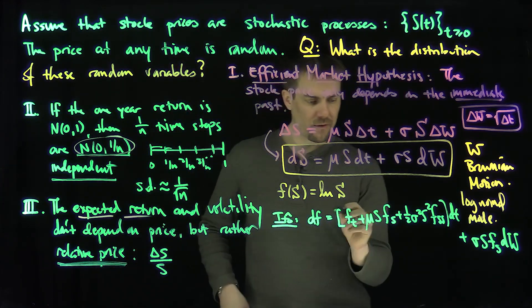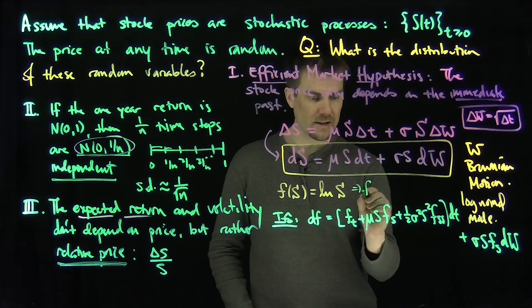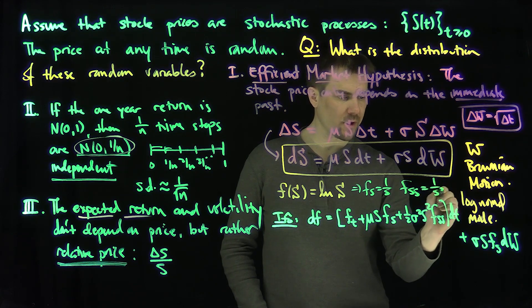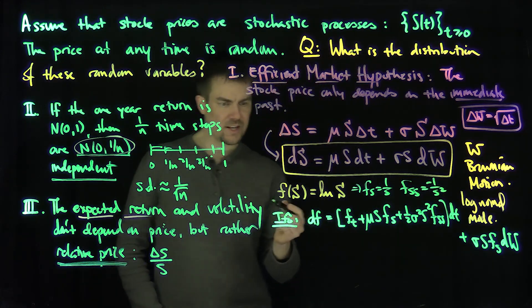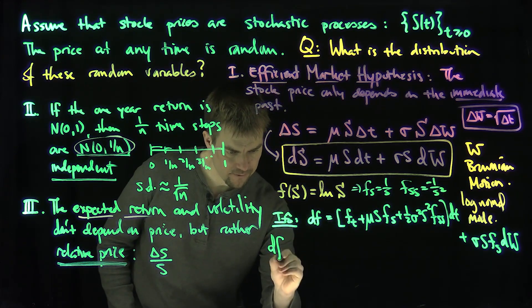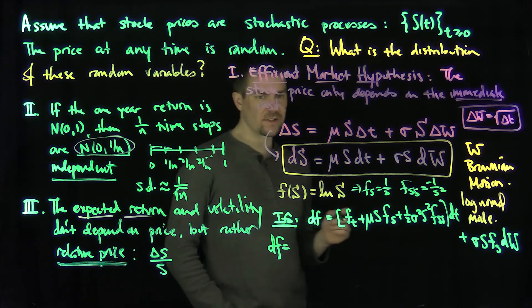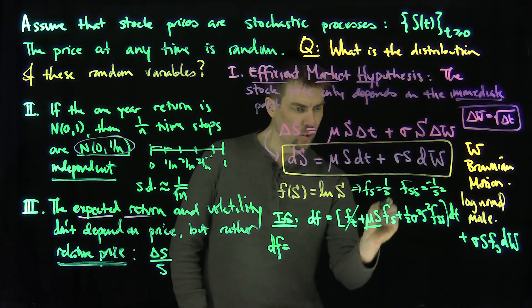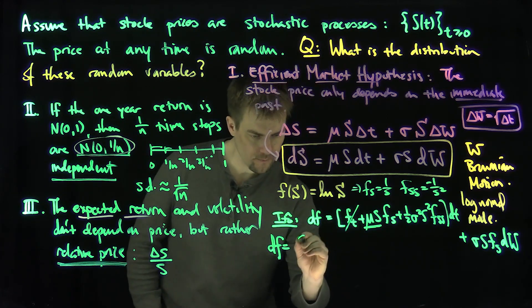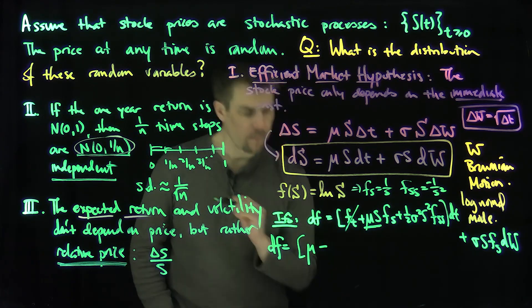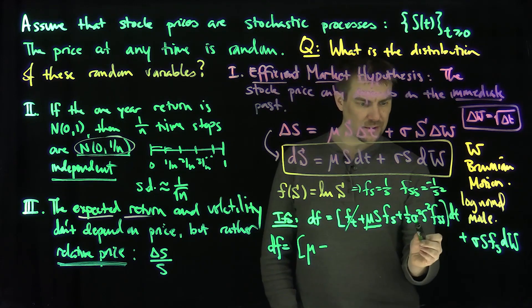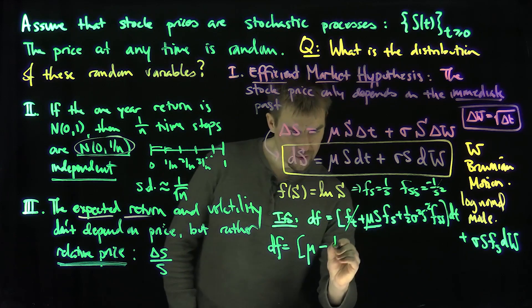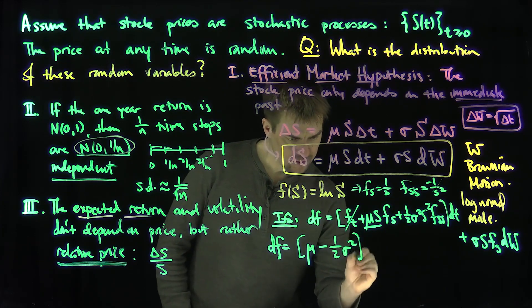Let's see what happens. We'll notice that F_S is 1/S, and F_SS is negative 1/S squared. So dF satisfies the following: there's no T dependence. I have mu times S times 1/S, that's just mu. The S squared is going to cancel with that S squared. It's going to be minus one-half sigma squared dt.